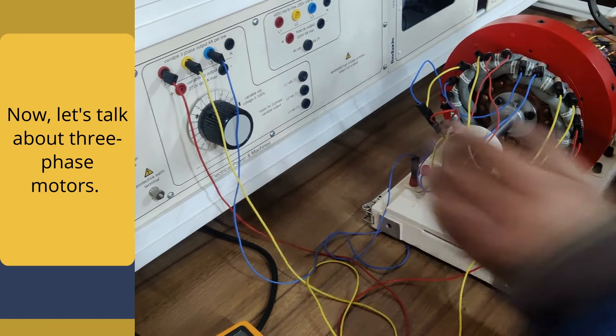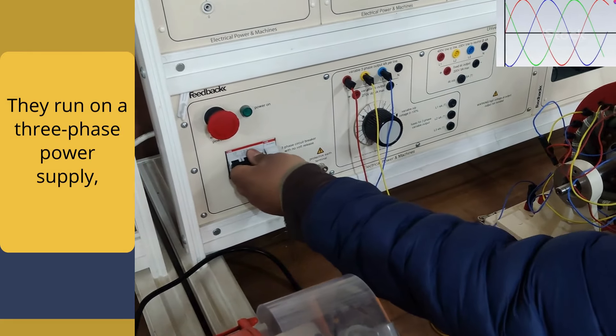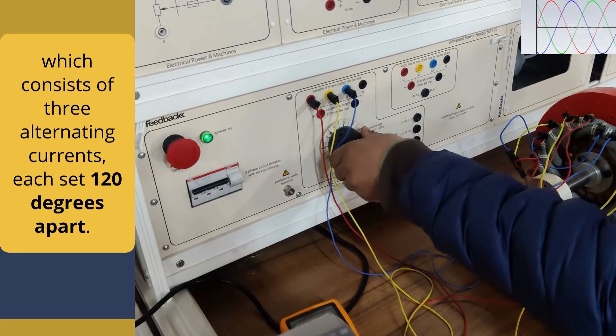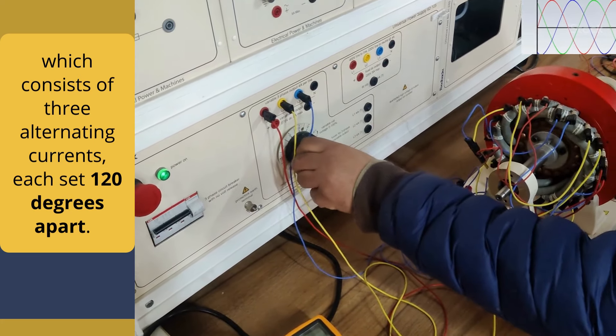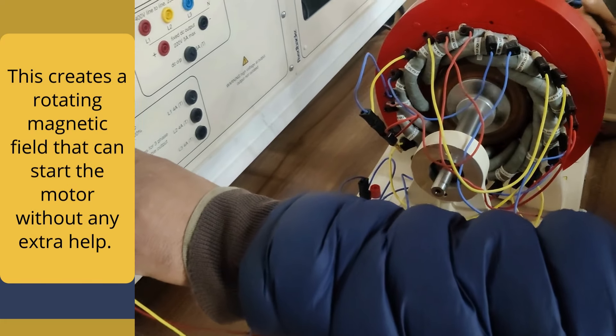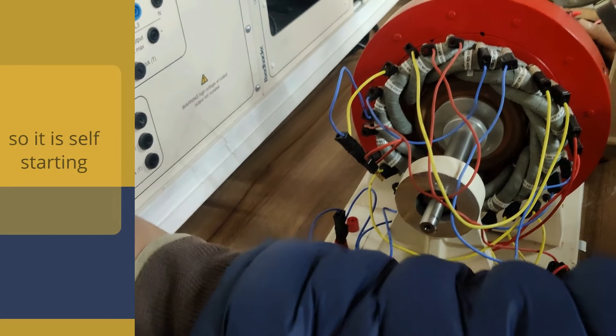Now let us talk about three-phase motors. As we know, they run on a three-phase power supply which consists of three alternating currents, each set 120 degrees apart. This creates a rotating magnetic field that can start the motor without extra help, so it is self-starting.